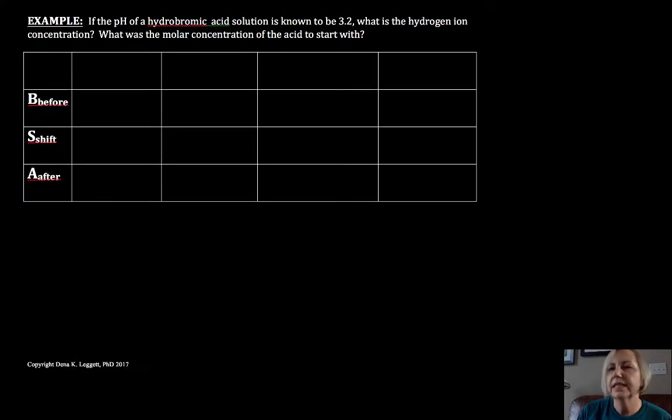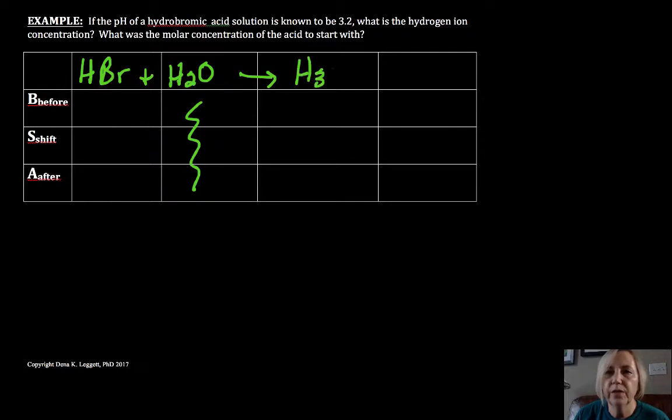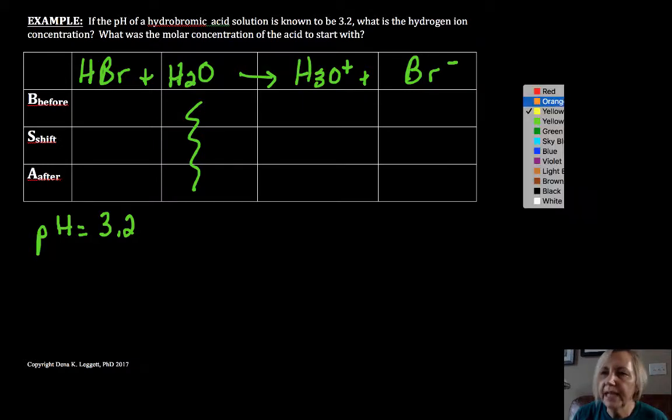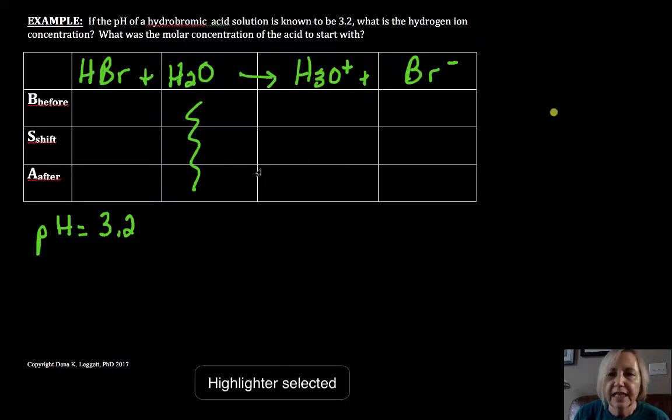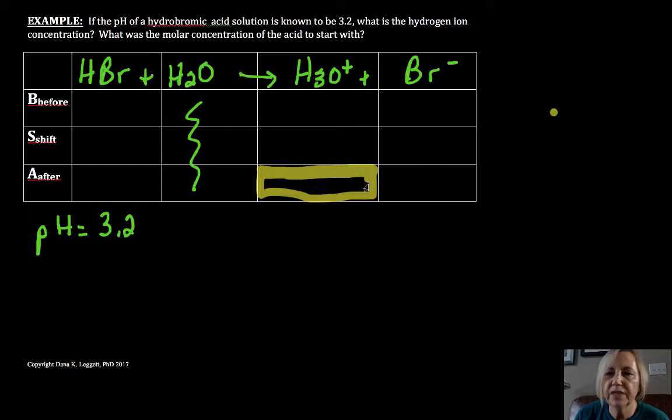So think logically when you get answers, don't just plug and chug into calculators. Let's take a look at this next one. This time we're going to go backwards. So I have HBr plus H2O, which I'm not worried about, yields H3O+ plus the conjugate Br-. This time I'm given a pH, so my pH is equal to 3.2.